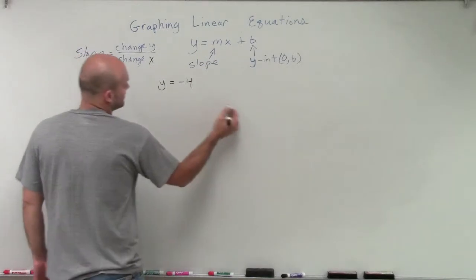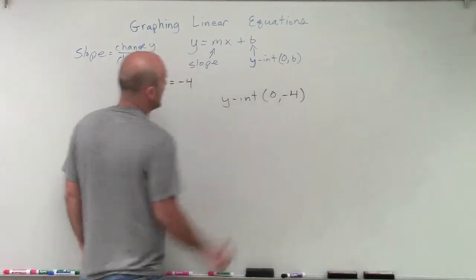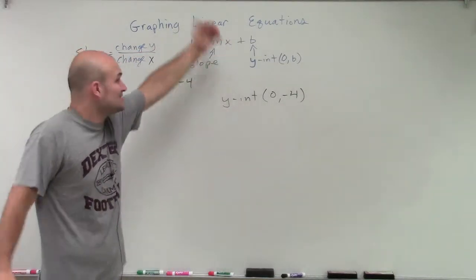So we can determine that the y-intercept in this case is going to be at 0, negative 4. However, the problem is, what is our slope? We don't have any number that's being multiplied by x, and we don't even have an x.